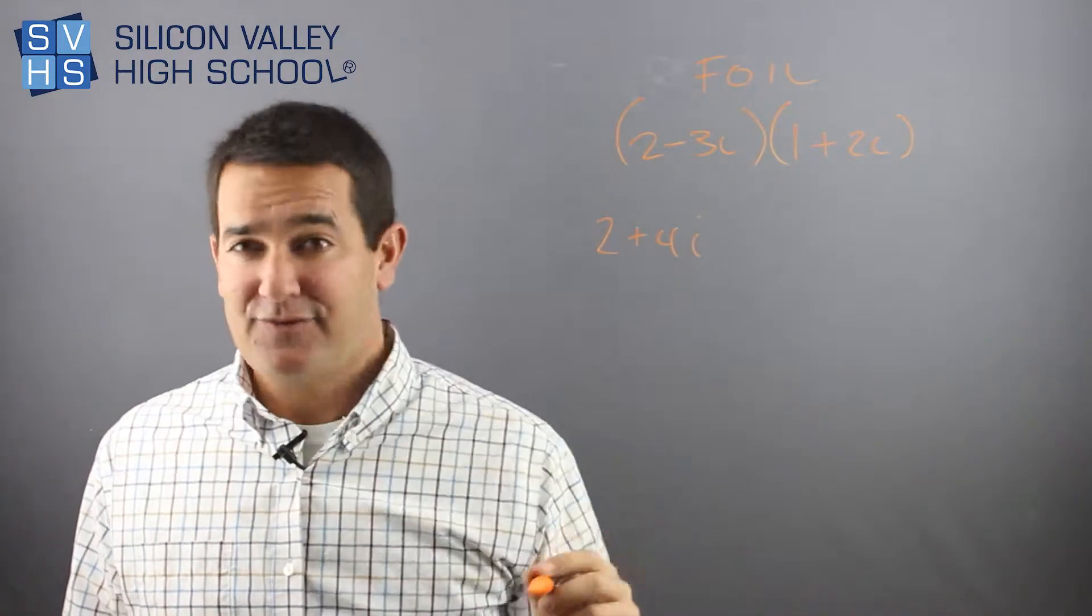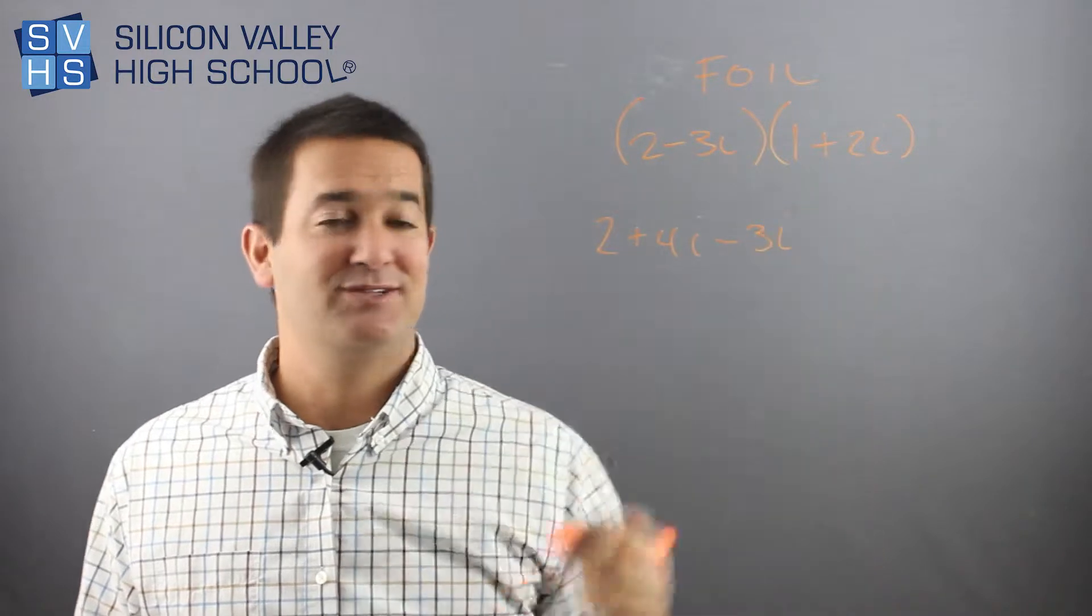Inside times inside, negative 3i times 1 is just negative 3i, and then here's where the curveball comes in.